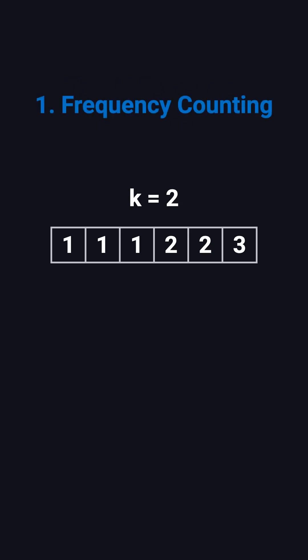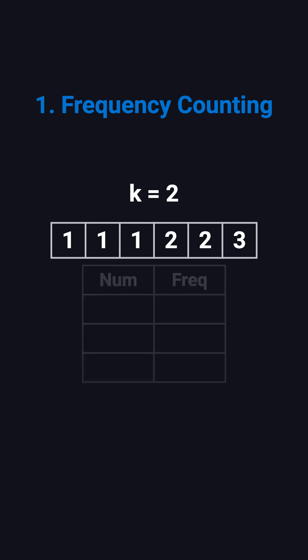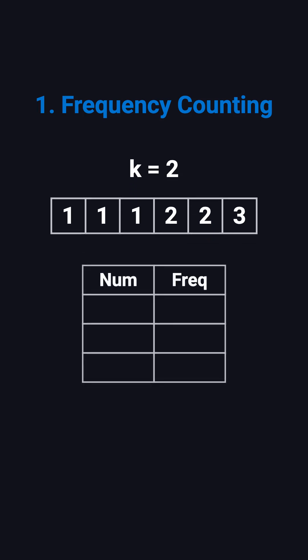To solve it, the first thing we must do is count how many times each number appears. The easiest way is to use a hash map. We loop through the array, use each number as the key, and store its frequency as the value. For this example, after one pass, we get something like 1 maps to 3, 2 maps to 2, and 3 maps to 1.